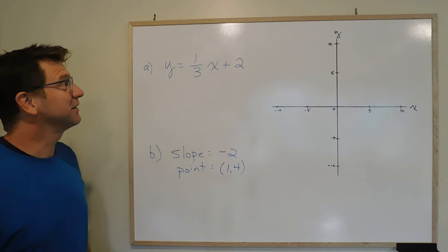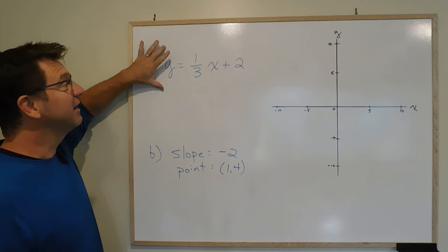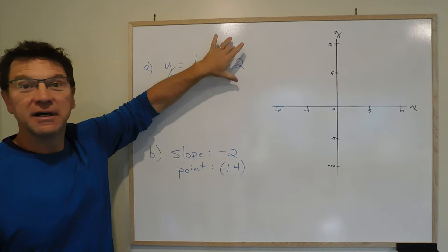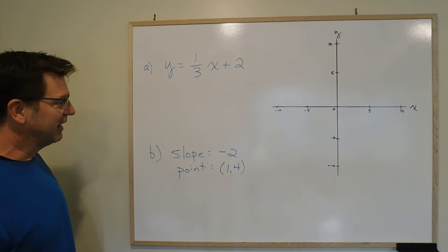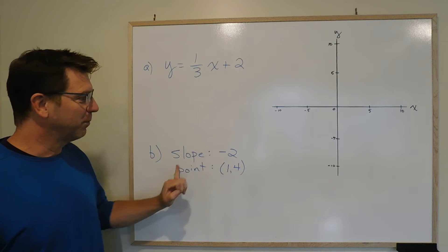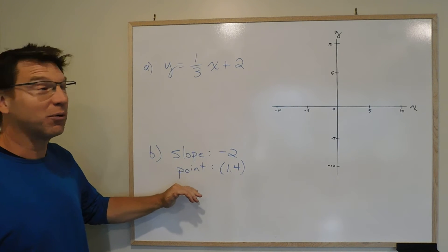But let's hang in there, we have a couple of topics to go. This one here is asking us to do a couple of things. It's asking us to graph this line that has the equation y equals 1 third x plus 2. And then a separate question, part B, to graph a different line. We know the slope and the point. We don't know the equation but we do know the slope and we do know the point.